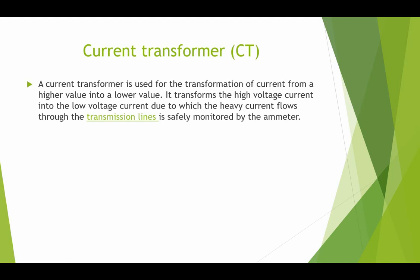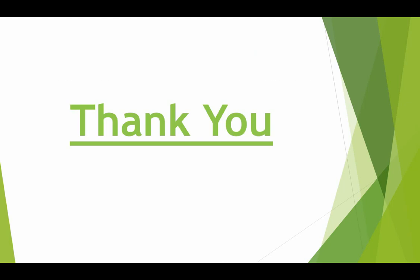Similarly, the current transformer (CT) is used for the transformation of current from a higher value to a lower value. It steps down the higher current to a low value so that it can be monitored or measured with an instrument like an ammeter. Both potential transformers and current transformers are called instrument transformers and are used in power systems for metering and protection purposes. Thank you, this is all about transformers.